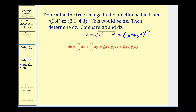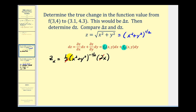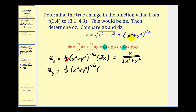The partial of z with respect to x is equal to one-half times x squared plus y squared to the negative one-half, times the derivative of x squared plus y squared with respect to x, treating y as a constant — so that's two x. The two's simplify, giving us x over the square root of x squared plus y squared. For the partial of z with respect to y, it's one-half times x squared plus y squared to the negative one-half times two y, which simplifies to y over the square root of x squared plus y squared.